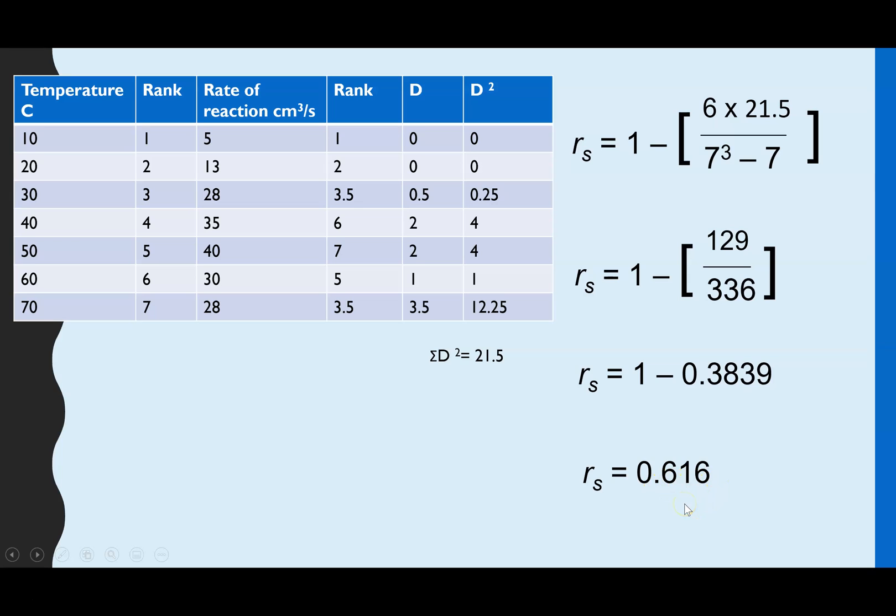Now at this stage we can't tell if that means we have a significant correlation or not. We know that because it's a positive value it is a positive correlation if we have one and it's almost halfway between 0 and positive 1. So if it is a significant correlation it's a very weak one.